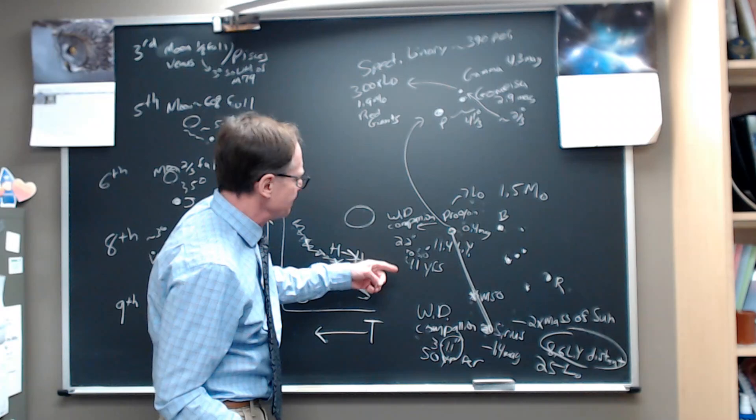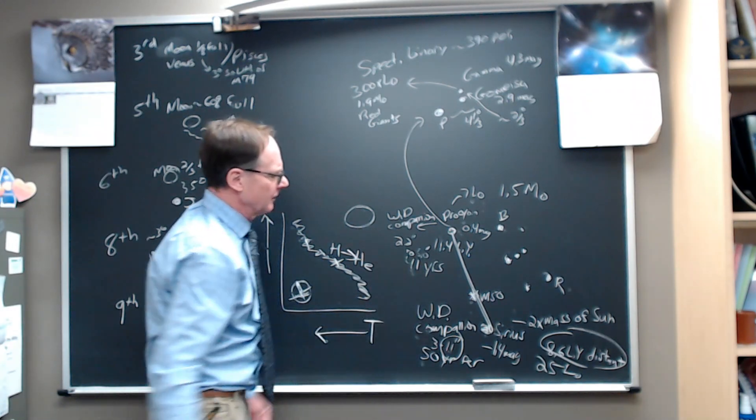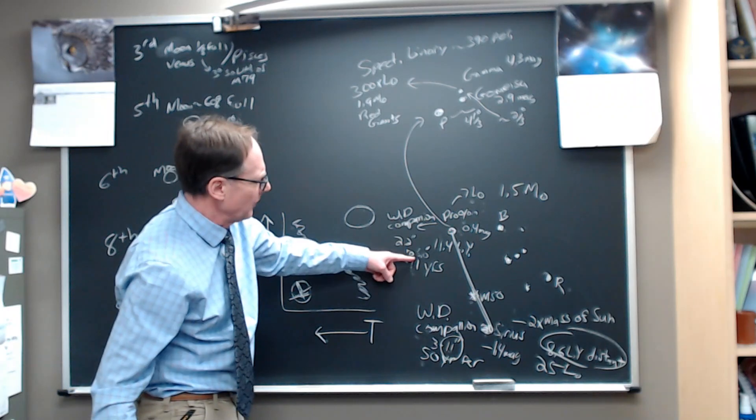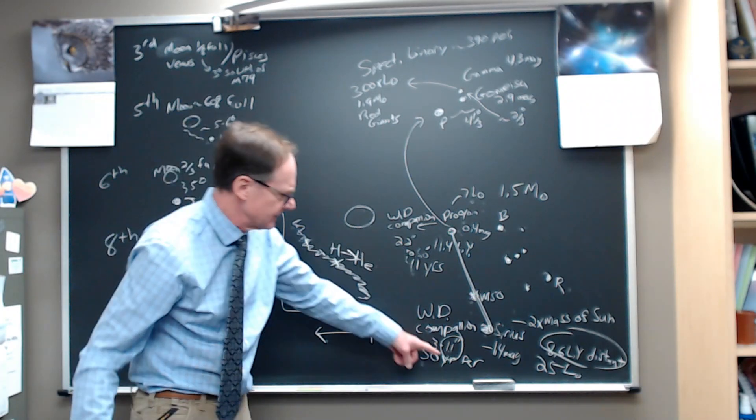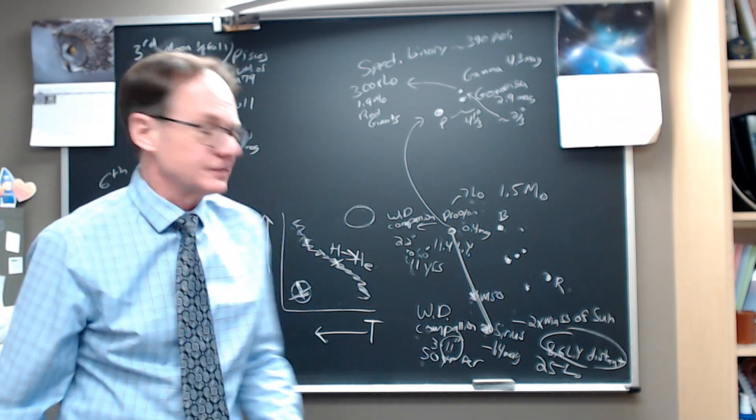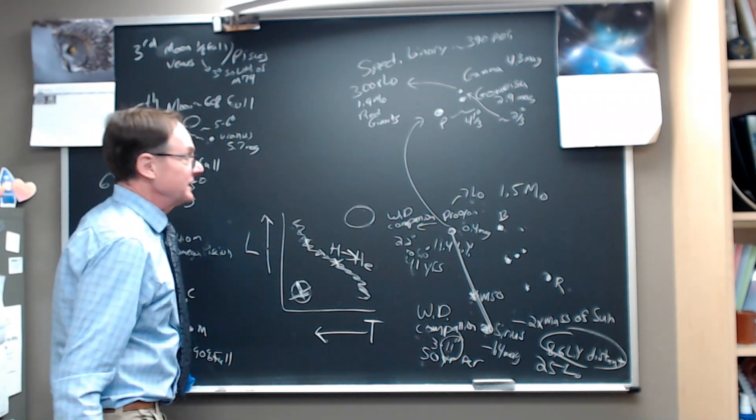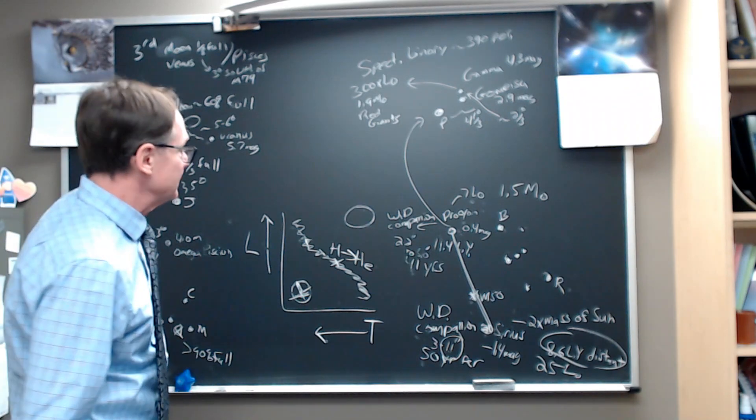Procyon's white dwarf companion, the orbital period is 50 years there and about 40 years for Procyon's. It only varies from 2.2 to 5 arc seconds. So it never gets very wide, and it's closer to this end right now. I don't think you're going to see the white dwarf companion to Procyon. So if you want to try Sirius, give it a try. I think it would be great. Let me know if you see it. I would love to know it.